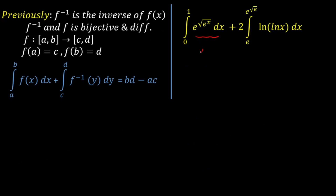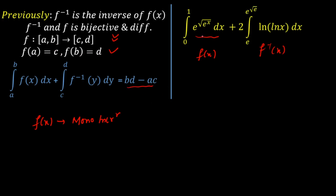I've verified the inverse relationship. Now I need to check two more conditions. Since f must be bijective, it must be either monotonically increasing or decreasing. I assumed f(a) = c and f(b) = d, which gives the result bd minus ac, so I need f to be monotonically increasing. Since f(x) = e raised to the power of root over e raised to the power of x is an exponential function, it is indeed monotonically increasing on the domain 0 to 1.